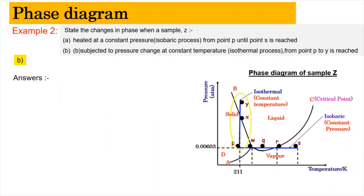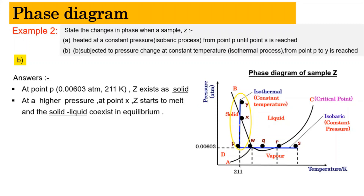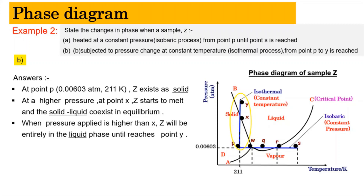For situation B, starting from point P at 0.00603 atm and 211 Kelvin, Z exists as a solid. When it reaches point X, Z starts to melt and solid-liquid coexist in equilibrium, as it is located on the melting line. When more pressure is applied, Z will be entirely in the liquid phase until it reaches point Y.